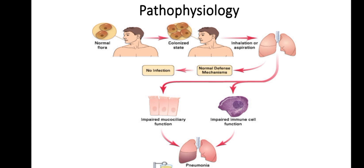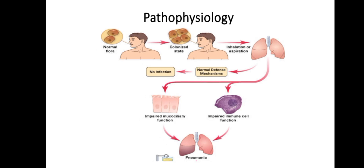Regarding pathophysiology, normally there is flora in the oral and nasal cavities. When that normal flora becomes colonized, there is inhalation or aspiration, and the normal defense mechanism comes into action preventing infection. However, if there is impaired immune cell function or impaired mucociliary function, those impaired functions make it easier to acquire pneumonia.